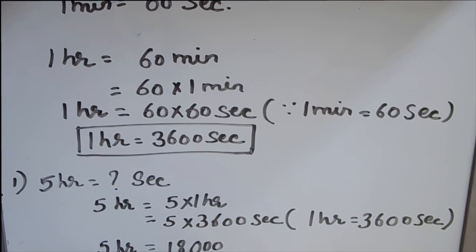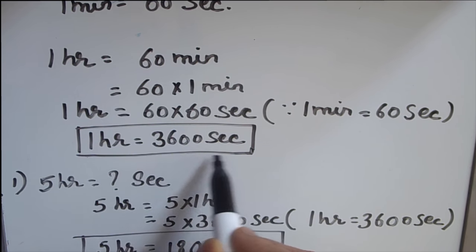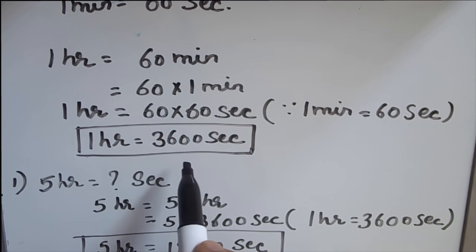So this will be five times six is 30, and five times three is 18,000 seconds. So five hours will be equal to 18,000 seconds. This is how, by multiplying the number of hours by 3600 seconds, we can convert any number of hours to seconds. This is how we convert hours to seconds.